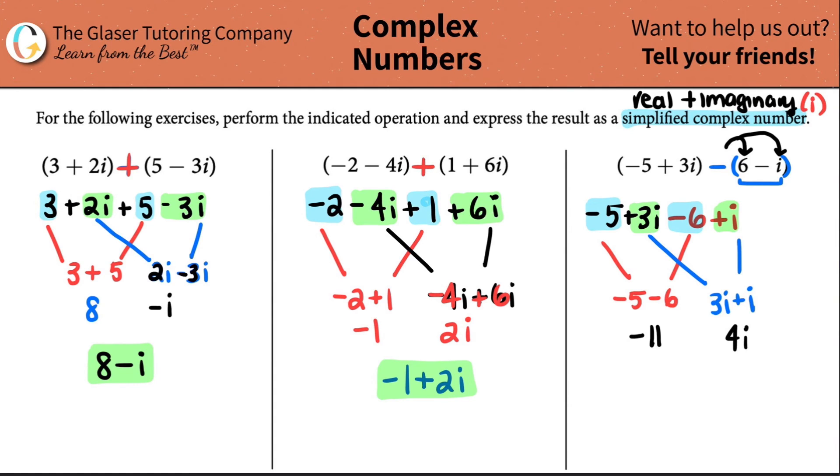And now we just group them together. And remember, real comes first and then the imaginary. So we have a negative 11. This was a positive 4, so plus 4i. And that's the end.